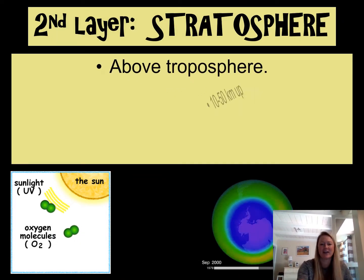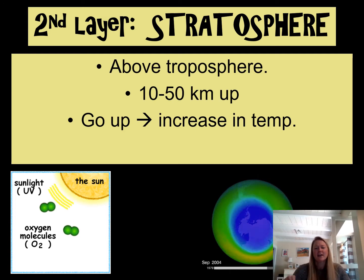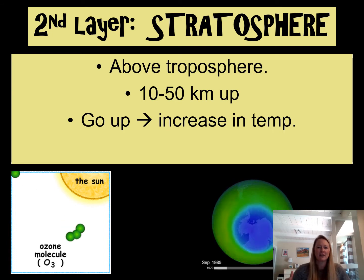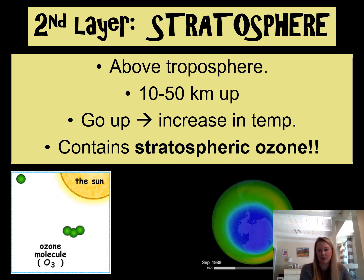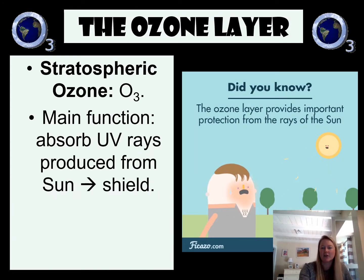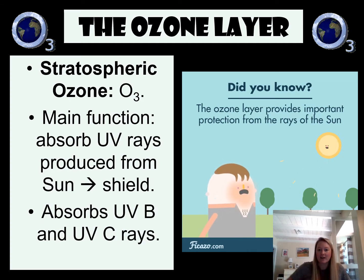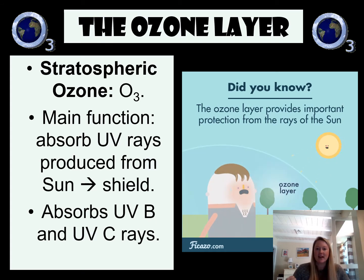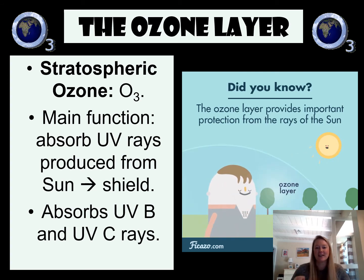Our second layer is the stratosphere, which is above the troposphere and goes from about 10 to 50 kilometers into the air. Interestingly, as you go up in the stratosphere, temperatures actually get warmer, because of a molecule called ozone — stratospheric ozone. Its main job is to absorb UV radiation from the sun, specifically UVB and UVC rays. In absorbing that heat energy, it makes the layer warmer, and it acts as a shield protecting Earth's surface from UV radiation.